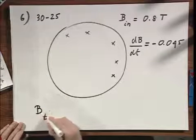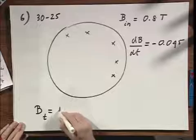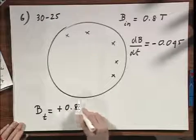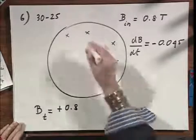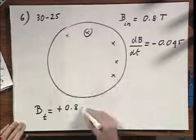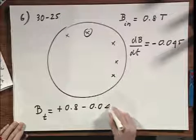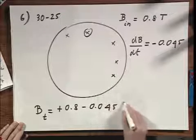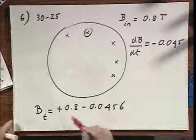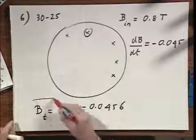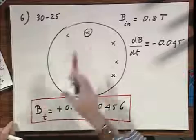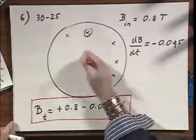If you want to know what B is at any moment in time, you would have plus 0.8 — if I call plus going into the paper — minus 0.045 times t. And if you wait long enough, then the field will even reverse. It will come out of the paper.